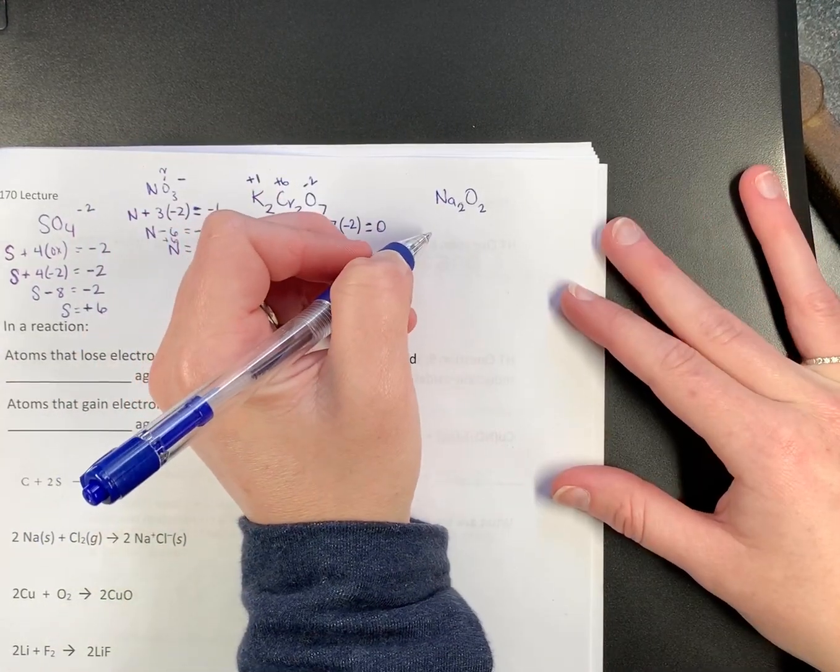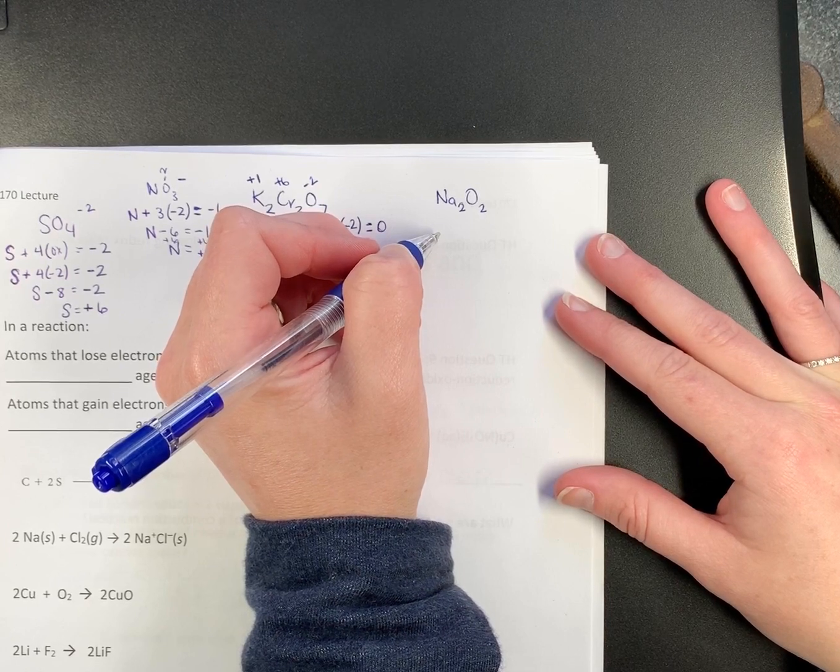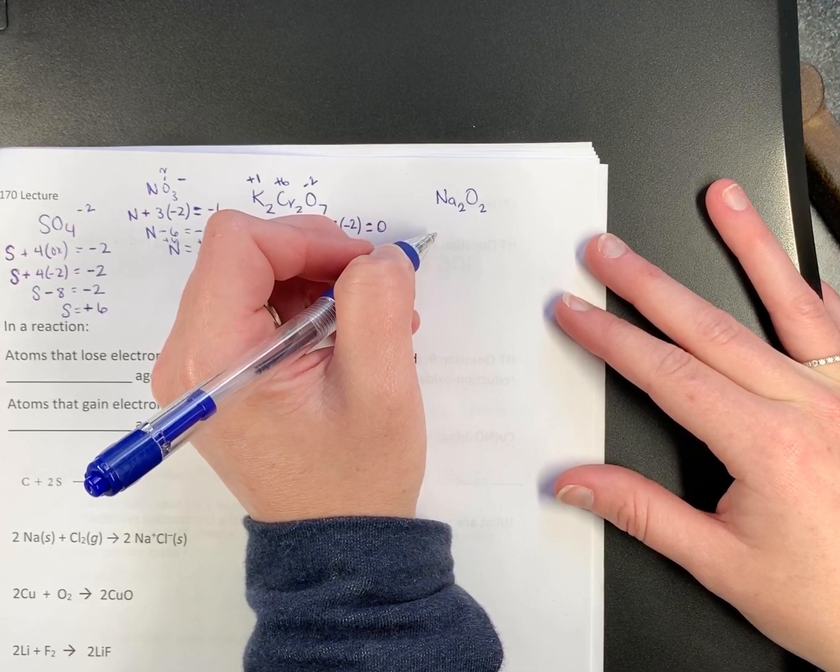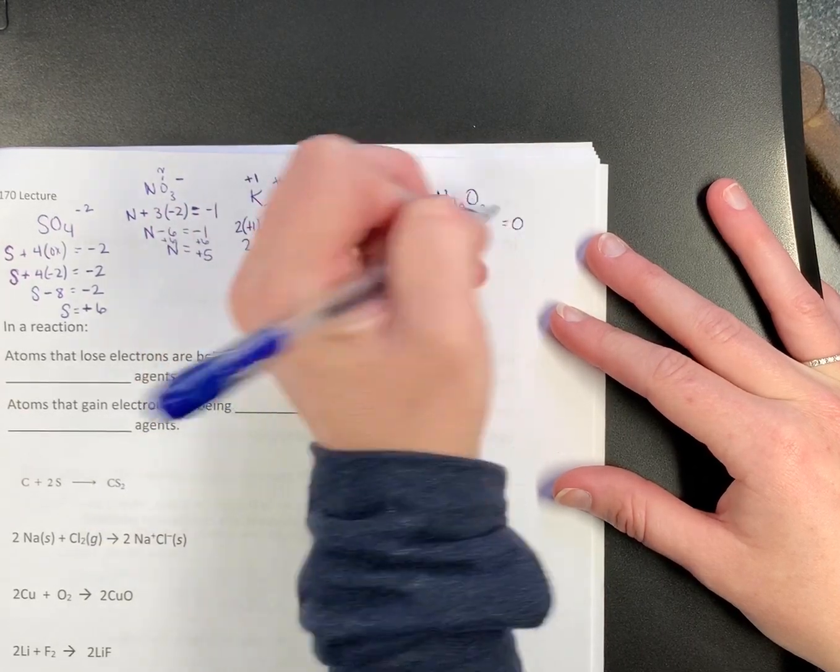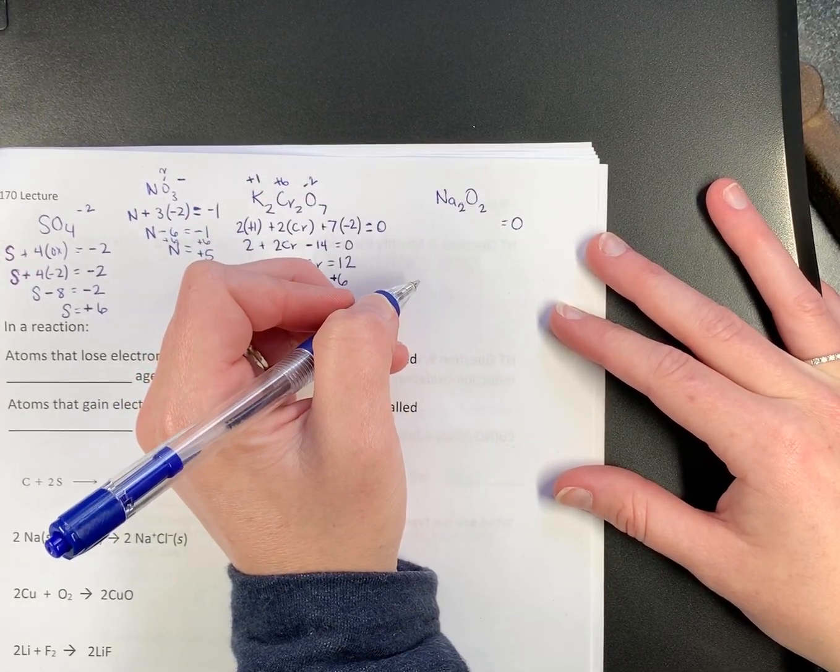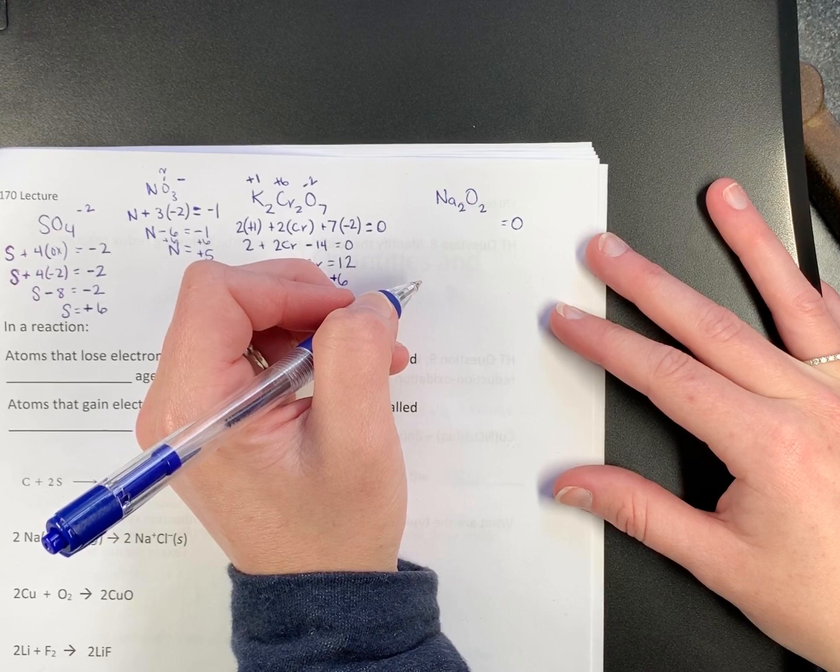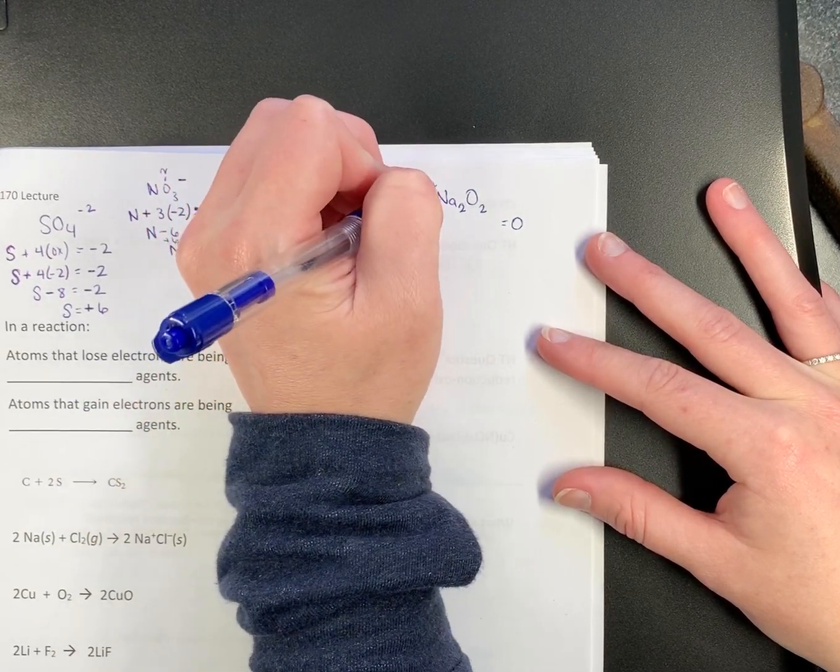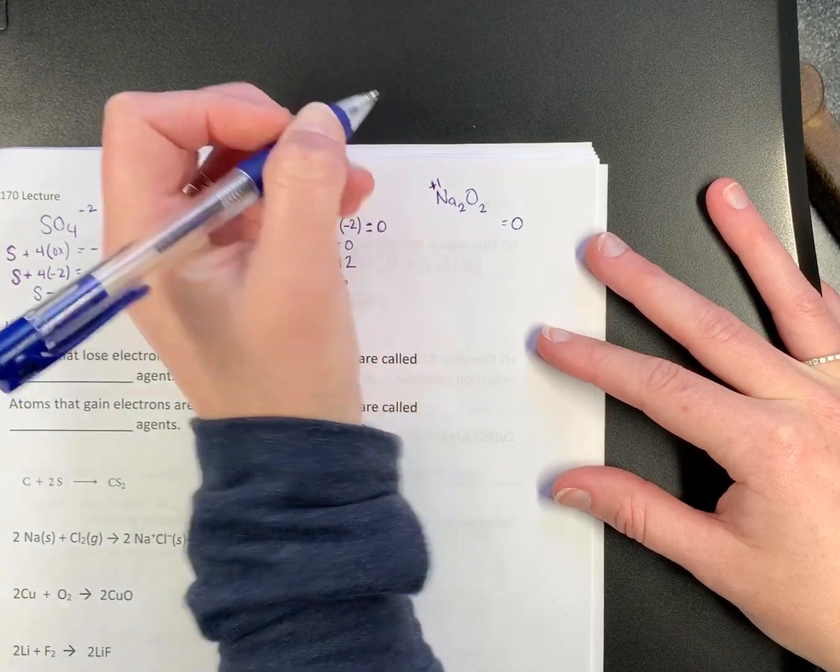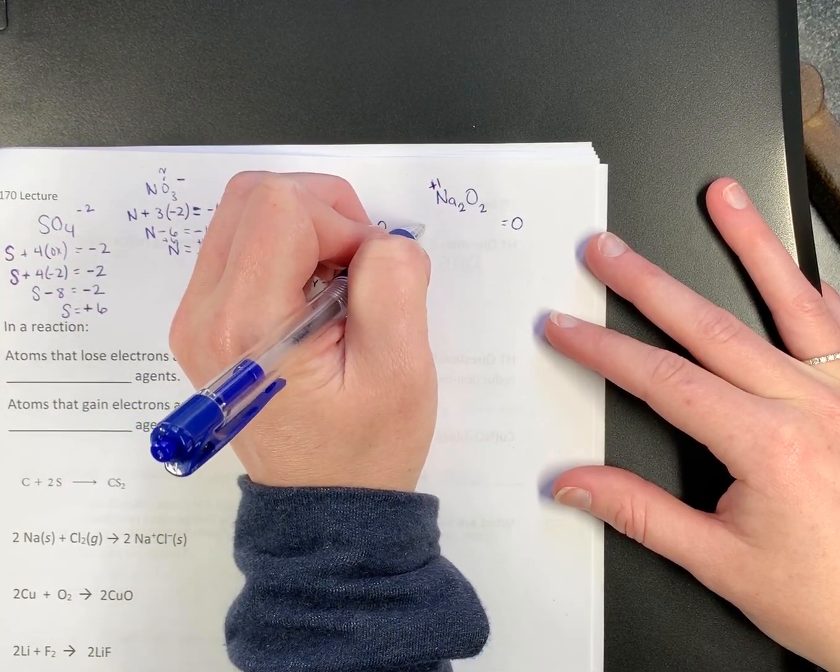Do we have any free elements? No. Do we have any single ions? No. Is this a neutral compound? Yes. Everything adds up to zero. Do we have any metals? Yes. Sodium. What is sodium's charge? Plus 1.